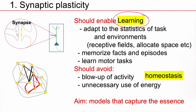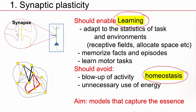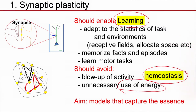So, synaptic plasticity should help us to learn, but it should also avoid blowing up of activity — it has to control the state of the brain, and that process of control is called homeostasis. Synaptic plasticity should also be used to control the amount of energy used in the brain. While learning corresponds to the specific parts, these are more unspecific control mechanisms.